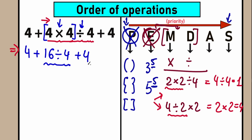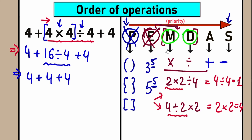We still have this division — don't forget about it. We need to complete the multiplication-division part before addition and subtraction. So now: 4 plus 16 divided by 4. 16 divided by 4 equals 4. And plus the final 4. We've completed the multiplication part and the division part in strict order from left to right.